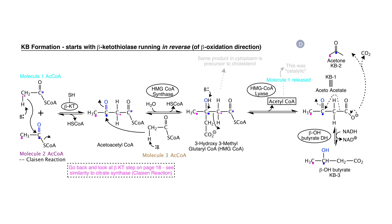Acetoacetate is a beta-ketoacid and hence prone to spontaneous decarboxylation. Non-enzymatically, this liberates CO2 and produces acetone — our second ketone body — which gives the fruity smell to the breath of a diabetic whose disease is out of control. Acetone is not biochemically useful and is not metabolized to generate energy. The second chemical fate of acetoacetate is its reduction by NADH using beta-hydroxybutyrate dehydrogenase, forming our third ketone body, beta-hydroxybutyrate, which is a biochemically useful molecule that serves as a good metabolic fuel.